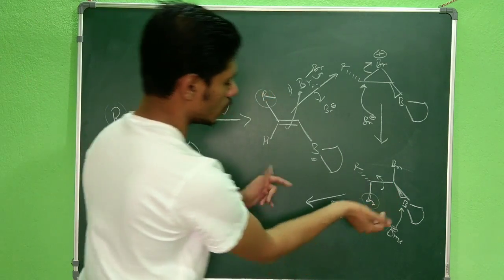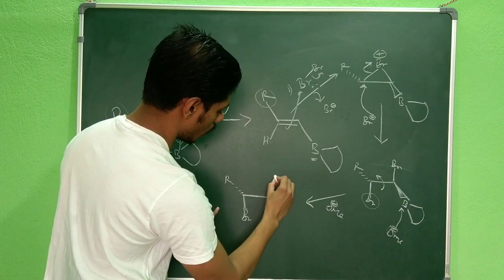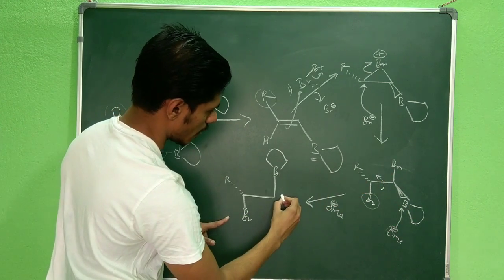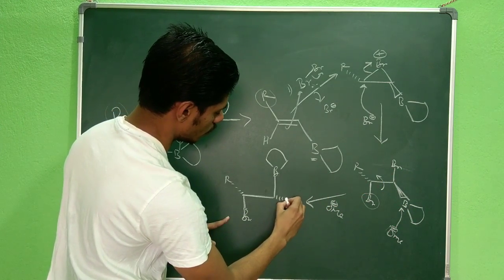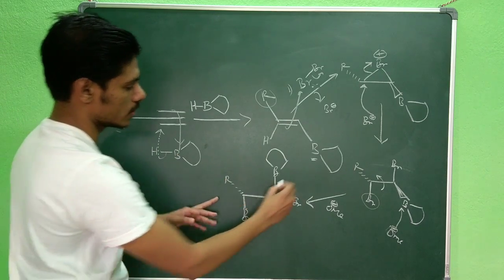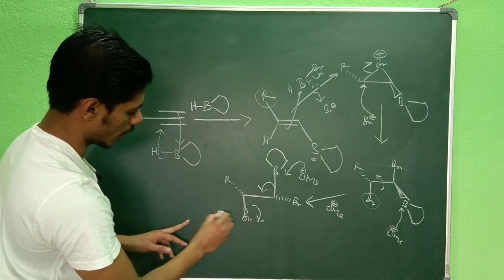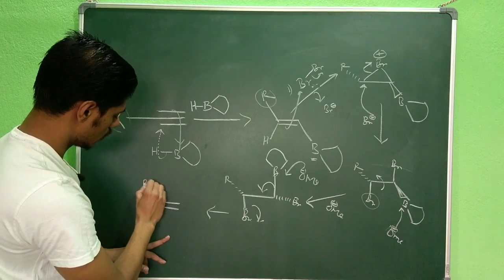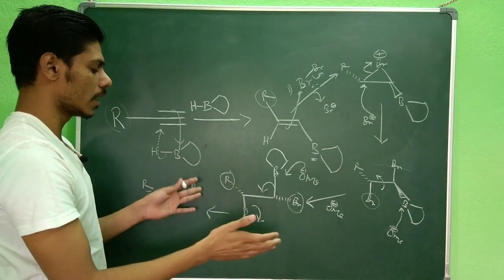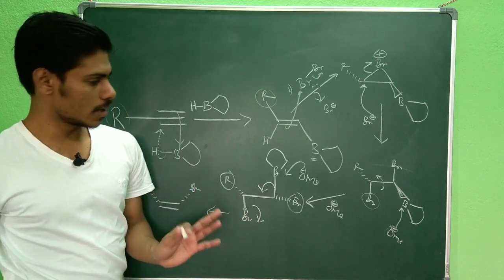The bond rotates so that bromine moves to the same side as the R group. The oxide then attacks the boron, the boron–carbon bond breaks, and finally the bromide is eliminated to give the product. In this rotation step, bromine and R become cis to one another — this is the key step, and this is how the cis product is obtained.